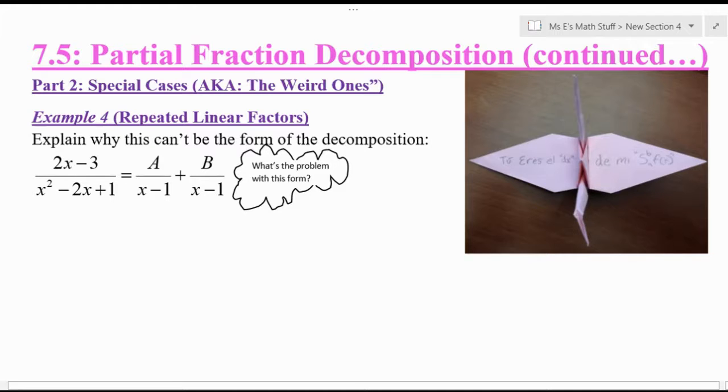For example 4, I'd like for you to look at the form that I've set out for the partial fraction decomposition of 2x minus 3 divided by x squared minus 2x plus 1, and figure out why that can't possibly be the form of the decomposition.